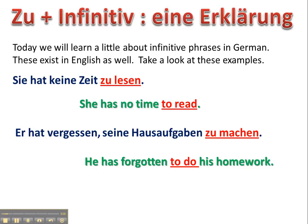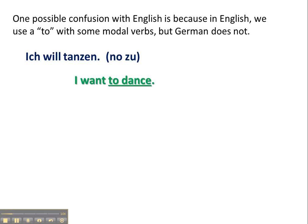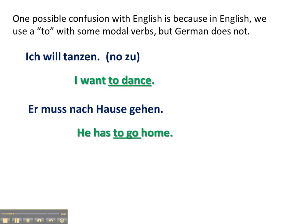One possible confusion with English is because in English we use a 'to' with some modal verbs, but German does not. In German those modal verbs are verbs like wollen, müssen, sollen, mögen, können. So for example, 'ich will tanzen' — in German they would not use the zu, but in English we would say 'I want to dance,' so we actually do use the 'to.' 'Er muss nach Hause gehen' — 'he has to go home.' So that's one difference.